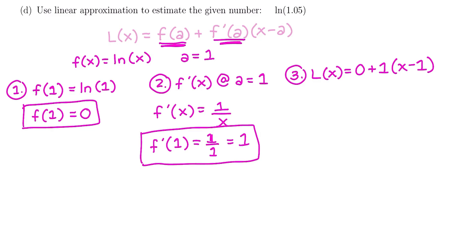And so we could leave it just like this, and that is totally fine. If it's easier for you to plug in just that, I would leave it like that. But that 0 is going to go away, and you have 1 times x minus 1, which is just going to leave us with x minus 1. So our approximate of ln of 1.05 is going to be approximately 1.05 minus 1. So it's approximately going to be 0.05.